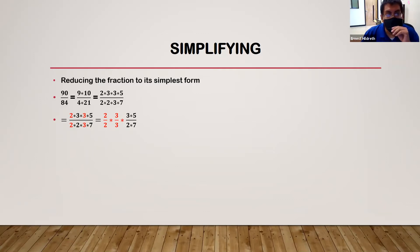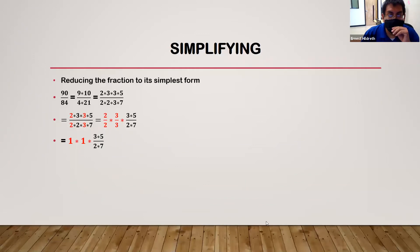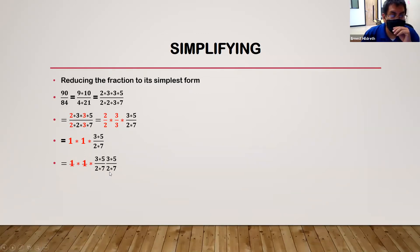The ones left in black will be used in the fraction. We have 2 over 2 as one, and 3 over 3 as one — those cancel out, leaving 3 times 5 over 7. That gives us 15 over 14.